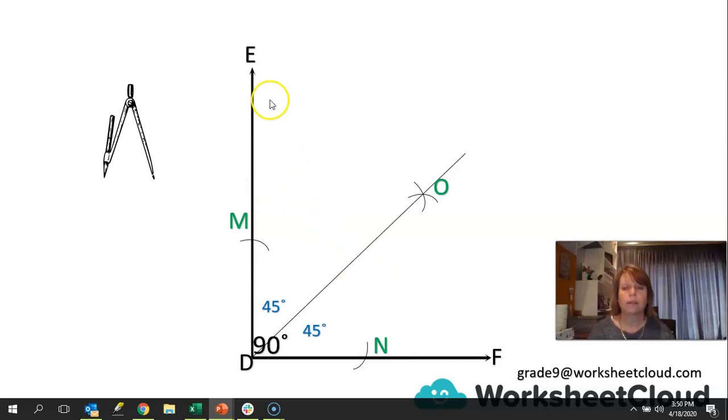That means that each angle is now 45 degrees. Because we have cut our angle in half. So EDO is the same as ODF. And they are both 45 degrees.